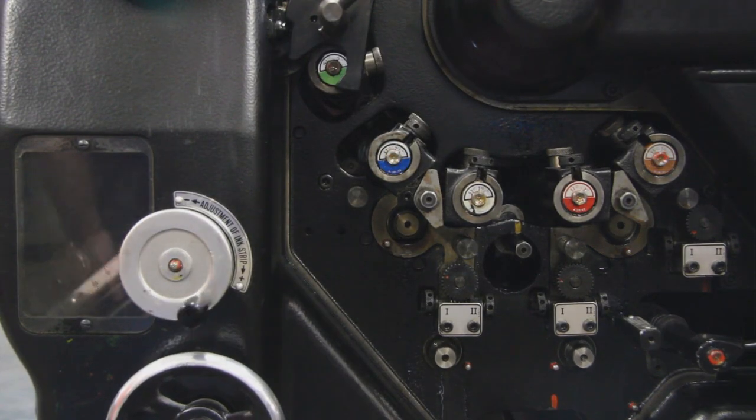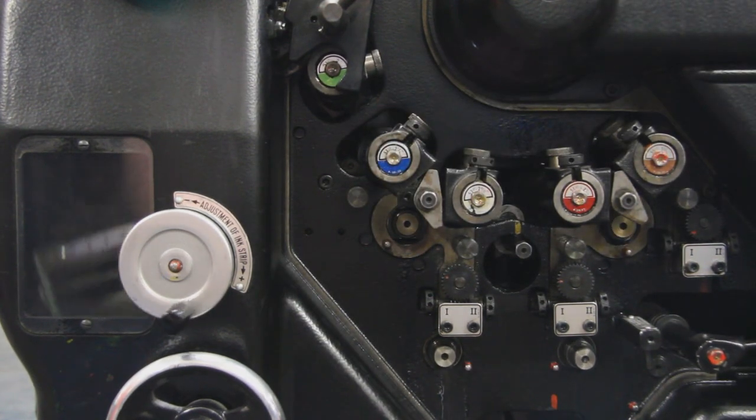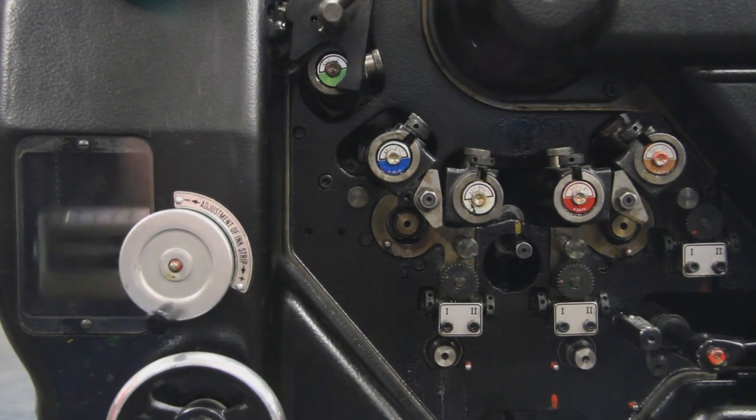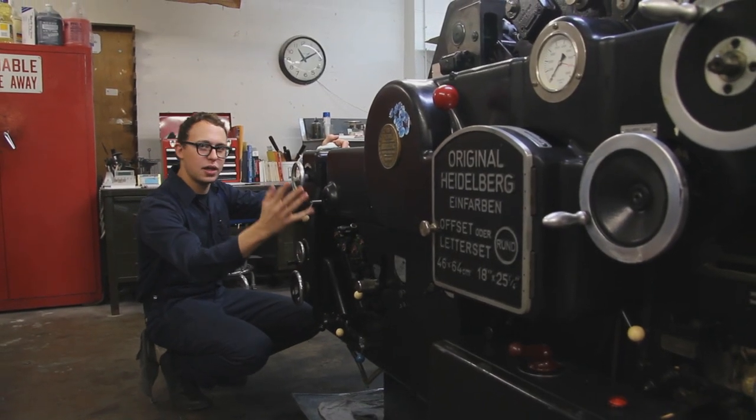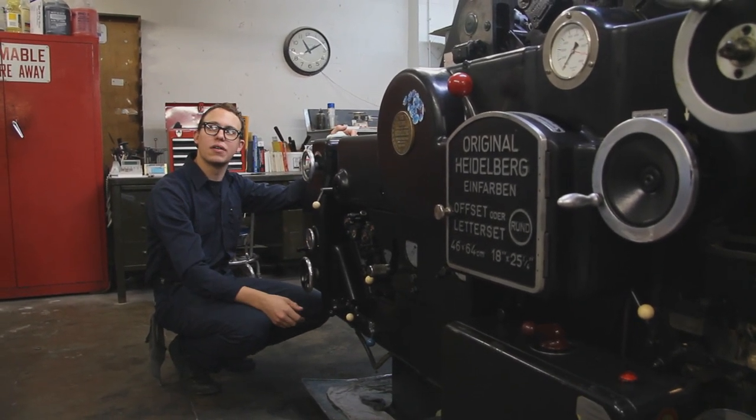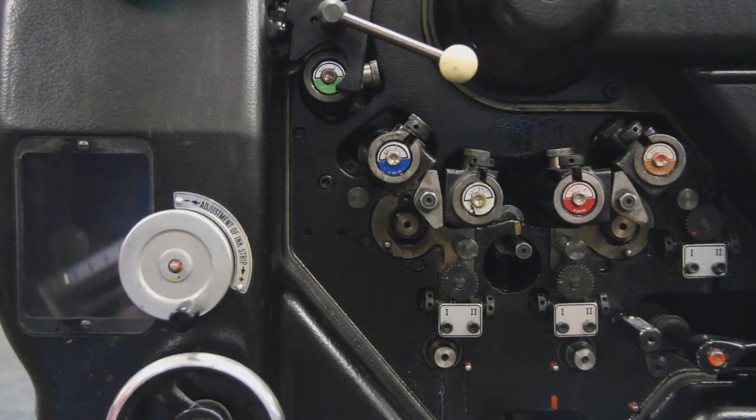Now along the side, there's four ink form rollers and two water forms. So these two, when they engage with the plate, they'll dampen the whole plate, and then these four will come through and lay down a nice layer of ink on there. And this is lithography, so it works on the basics that oil and water don't mix.